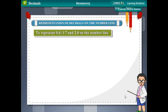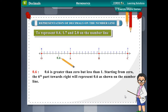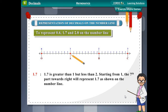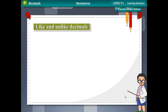To represent 0.6, 1.7, and 2.8 on the number line: 0.6 is greater than 0 but less than 1, so starting from 0, the 6th part towards the right represents 0.6. 1.7 is greater than 1 but less than 2, so starting from 1, the 7th part towards the right represents 1.7. 2.8 lies between 2 and 3, so starting from 2, the 8th part towards the right represents 2.8.